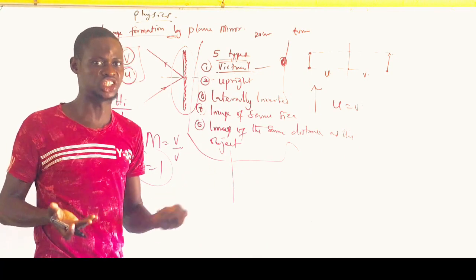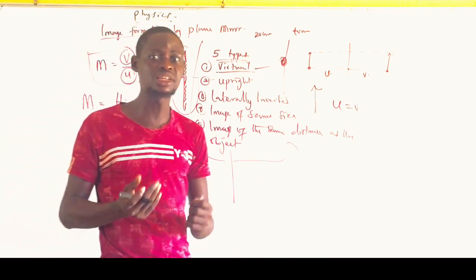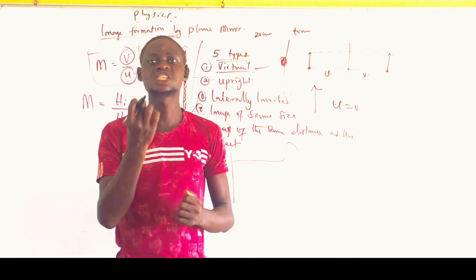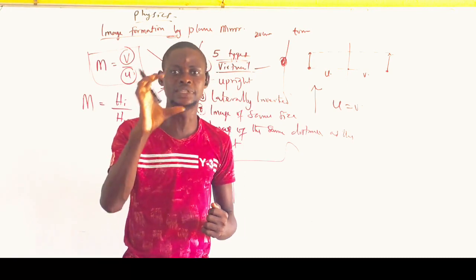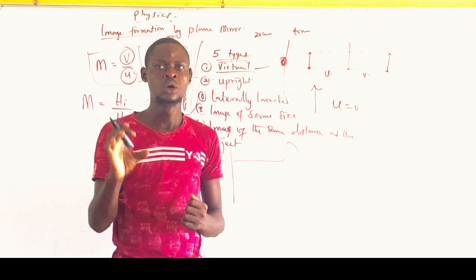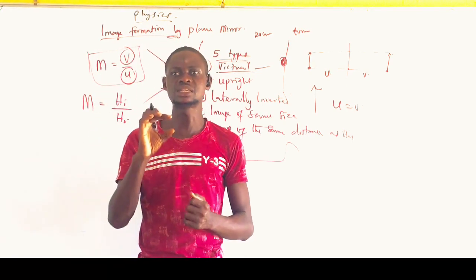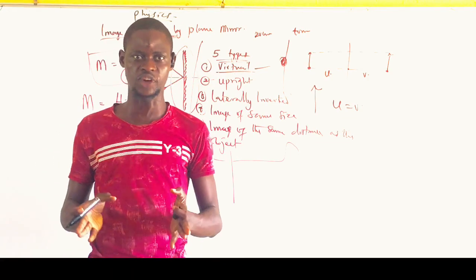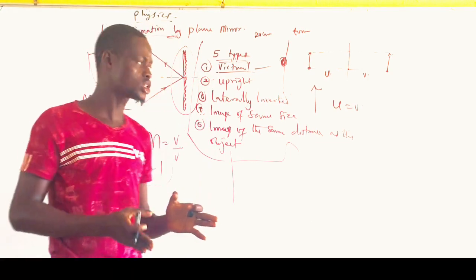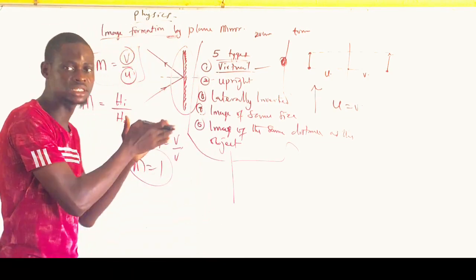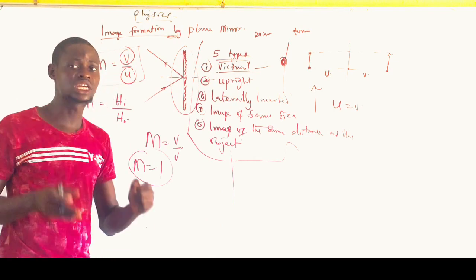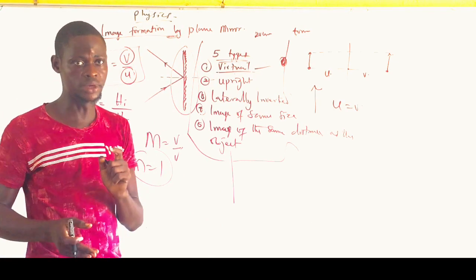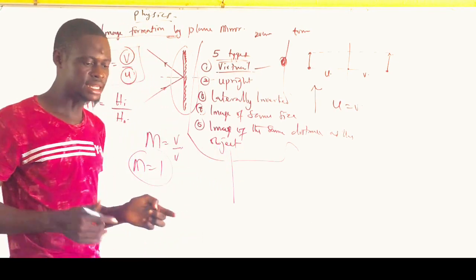The image is also never diminished. Diminished means the image is smaller than the object. Magnified means the image is larger than the object. Neither of these is a characteristic of the image formed by a plane mirror — take note of that.